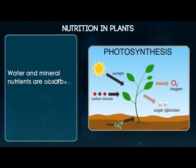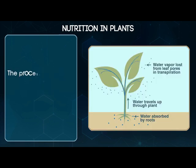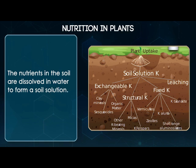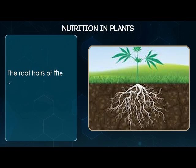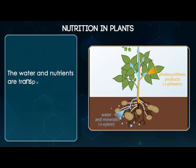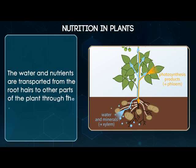Water and mineral nutrients are absorbed by the roots from the soil. The nutrients in the soil are dissolved in water to form a soil solution. The root hairs of the plant absorb the water and dissolved nutrients from the soil solution, which are then transported to other parts of the plant through the xylem vessels.